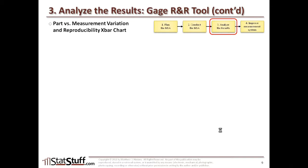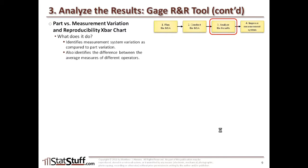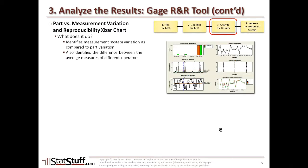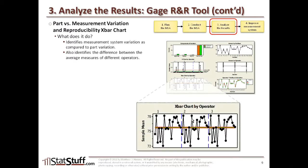The lower left chart we're exploring is the part versus measurement variation and reproducibility x-bar chart. This identifies the measurement system variation compared to part variation, and also identifies the difference between the average measures of different operators. Looking at this bottom left chart, the data points should reflect the same pattern between the different operators — the first, second, and third operator listed here.